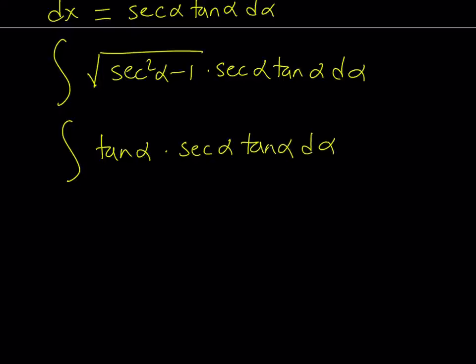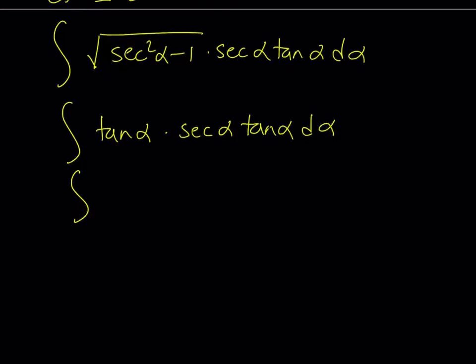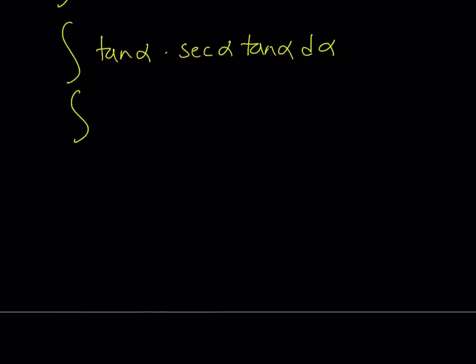This gives us a trigonometric integral which looks like the following: secant alpha multiplied by tangent squared alpha, d alpha.